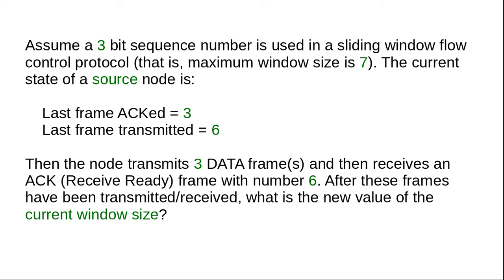That means that each frame is numbered from 0 through to 7, and then we wrap around back to 0 again. And the protocol has a maximum window size of 7 frames, meaning the source node is allowed to send at a maximum of 7 frames before it must wait for an ACK.